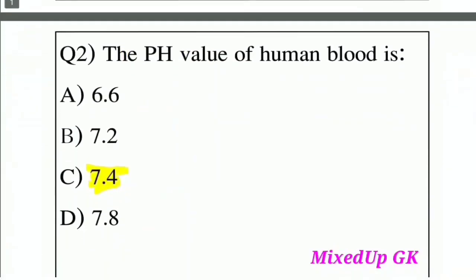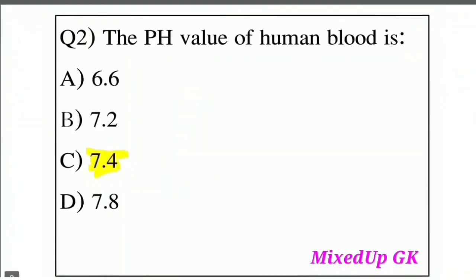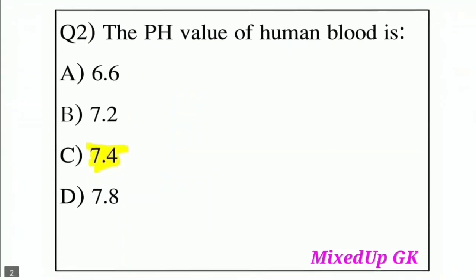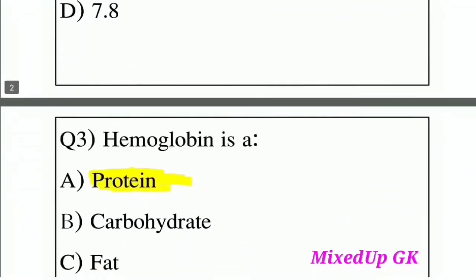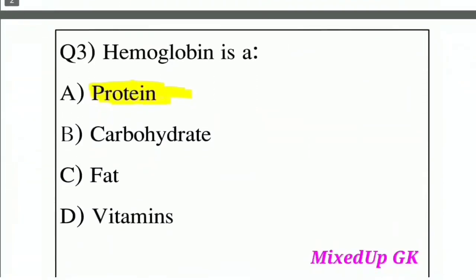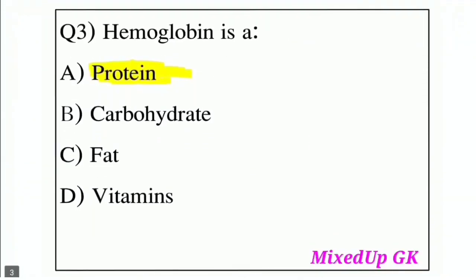Question 2: The pH value of human blood is — Option A: 6.6, Option B: 7.2, Option C: 7.4, Option D: 7.8. The correct answer is Option C: 7.4.